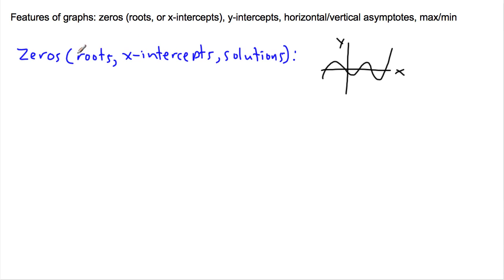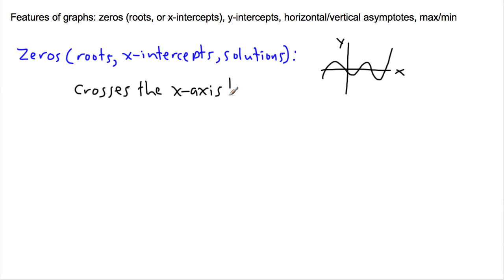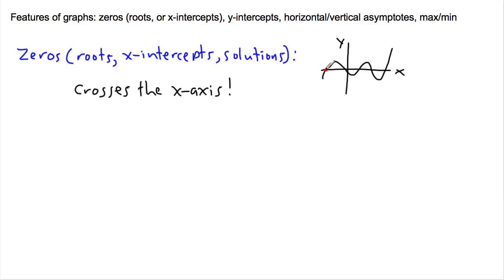If a question asks you to find the roots of something, it means the same thing as finding the zeros or the solutions. The most descriptive word is x-intercept, because what it implies is that it's where the graph crosses the x-axis. For example, in the little example I just showed you, this curvy graph crosses the x-axis here, here, here, here, and here — so this graph has five roots, or five zeros, or five x-intercepts, or five solutions.